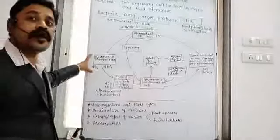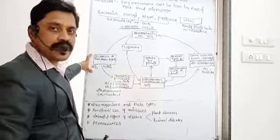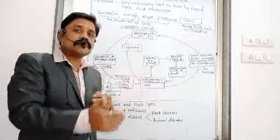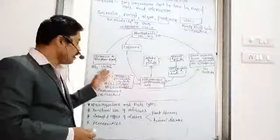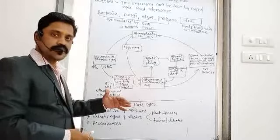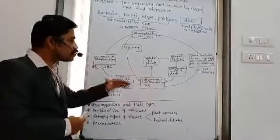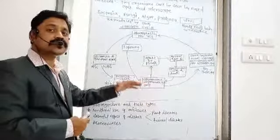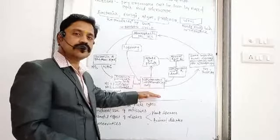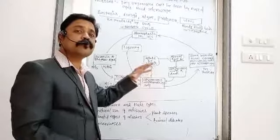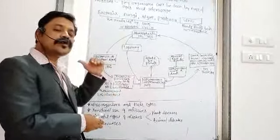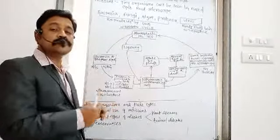Atmospheric nitrogen is first converted by some bacteria into ammonia and ammonium ions. Ammonia and ammonium ions are toxic in nature, so plants cannot utilize them. Some microorganisms then work on ammonia and ammonium ions and convert them into nitrites and nitrates. Nitrites and nitrates are nitrogenous compounds — they dissolve in water and, once deposited in the soil, can be absorbed by plants. The bacteria responsible for converting ammonia and ammonium ions into nitrites and nitrates is Nitrosomonas bacteria.